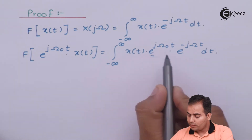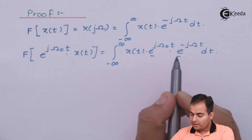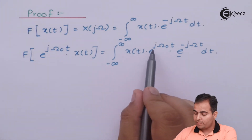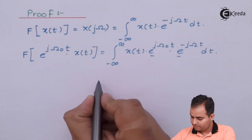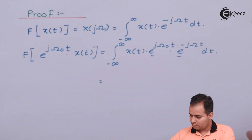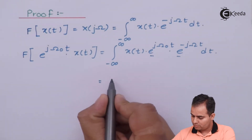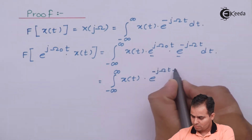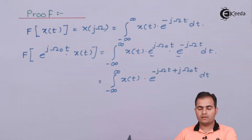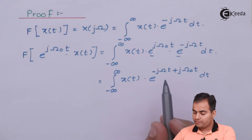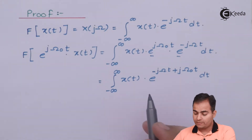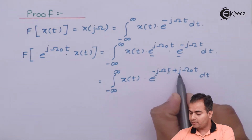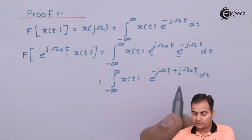So now what I am going to do is add the powers of the exponential terms. After adding, you will get this equation. Then I am going to take −jt common from both terms.